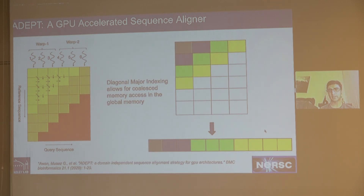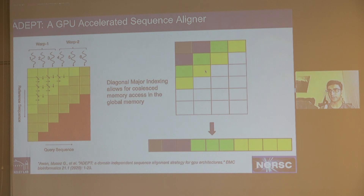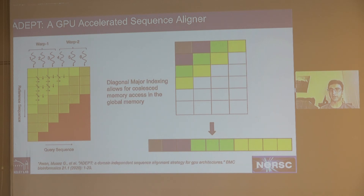The biggest challenge arises when storing traceback matrices. These matrices can be large. The deeper challenge is that with diagonal-major indexing, two consecutive elements of a diagonal are placed one full sequence length apart in column-major or row-major memory layout, making caching very difficult and causing non-coalesced memory accesses on the GPU. To solve this, we restructured the DP matrix layout so that elements of a diagonal are stored close together. We compute two indices on the fly: one for the diagonal index and one for the offset within the diagonal.